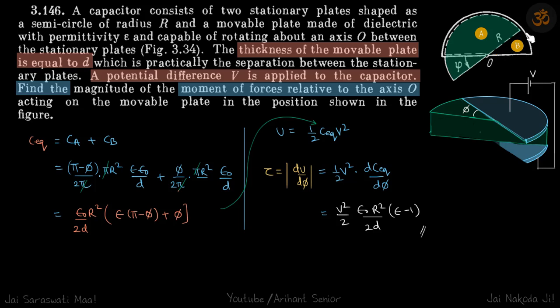C equivalent is C_a plus C_b. For the A region, it's going to be εε₀/d, and A will be angle subtended by this arc which is (π - φ) by total angle 2π into πr² into εε₀/d. And for the empty part, the capacitance will be φ/2π into πr² into ε₀/d.